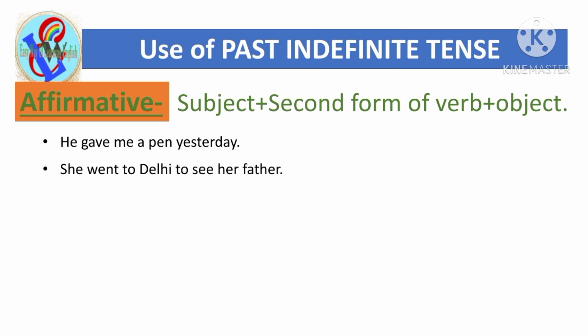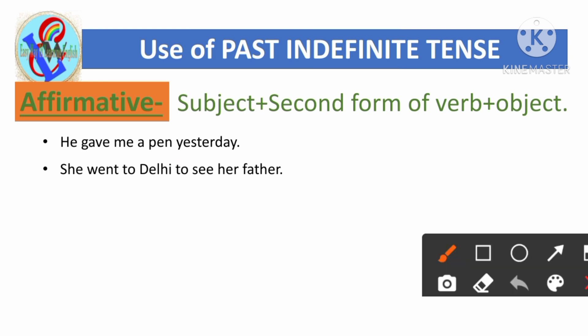Next example: 'She went to Delhi to see her father.' Here 'she' is the subject, 'went' is the second form of 'go' — 'go' means to go and 'went' means went — and she went to Delhi to see her father.